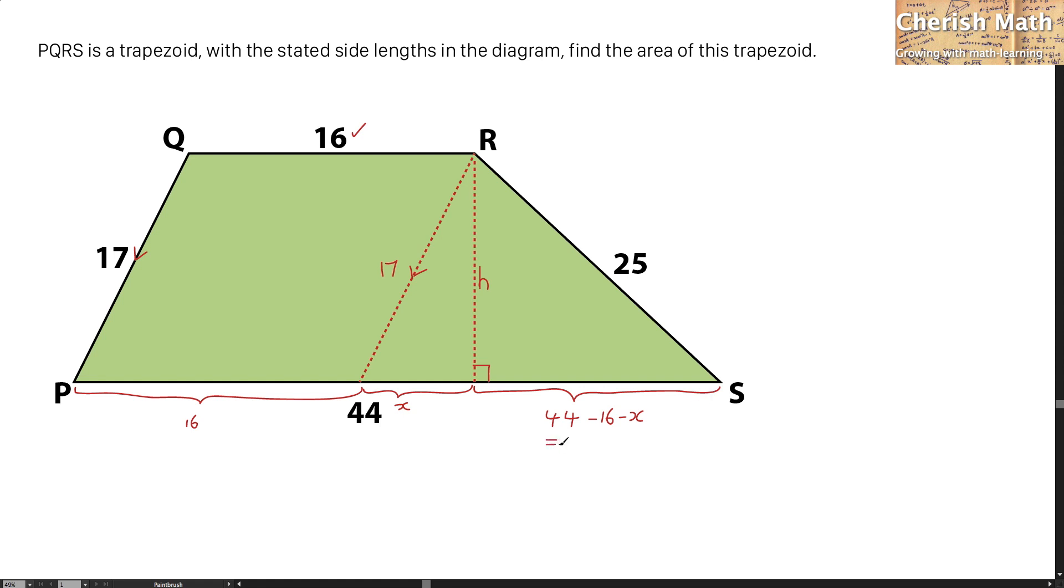I'm now trying to make h the subject for this triangle located on the right side here. That is by using the Pythagorean theorem. And this is how it goes. I'm now going to make another equation that focuses on h as the subject based on this triangle located on the left side.